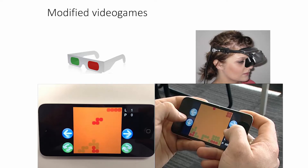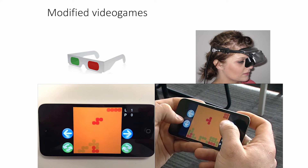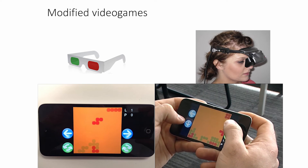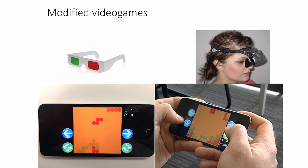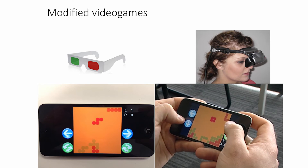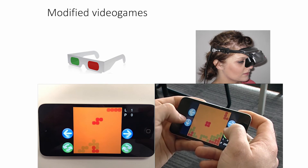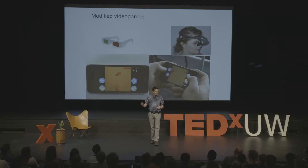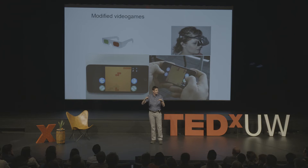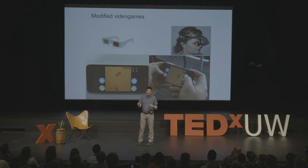Neither eye on its own has enough information to play. A participant is given the game and the contrast difference between the two eyes is set so that they can play. Over time, as they successfully play, the difference between the two eyes is gradually reduced in order to train the brain how to use the two eyes together.